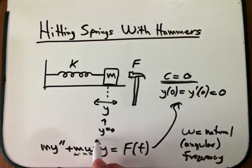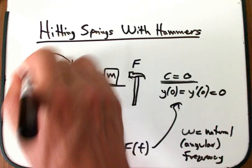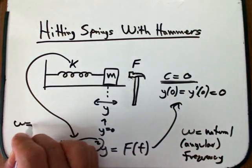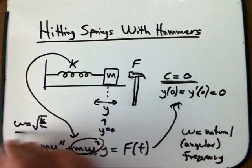So I wrote it this way to remind ourselves of the solution to the homogeneous equation. When this is zero, then the solution is just Y of T is A cosine omega T plus B sine omega T. And so omega is the natural frequency. And that's in radians per second, so it's an angular frequency. And so K, the answer to part A, K is just M omega squared.